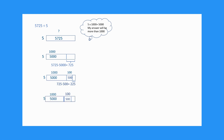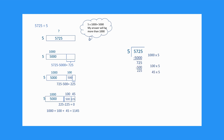Finally, I thought: what times 5 would be close to or exactly 225? I know that 40 times 5 is 200 and 5 times 5 is 25, so 45 times 5 would be 225. I showed the area of 225 on my rectangle and labeled the partition side length 45. I then added up my side lengths to get a total of 1145. Since this is more than my estimate, it is reasonable. Next, I used the partial quotients algorithm to solve the problem. Look at the connections between the open area model and the partial quotients algorithm.